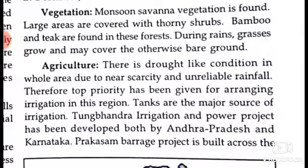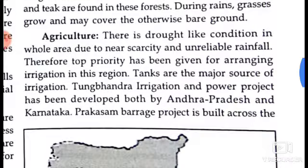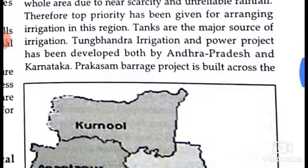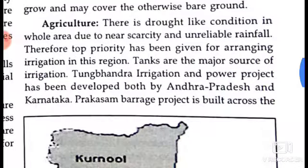There is drought-like condition in the whole area due to near scarcity and unreliable rainfall. Therefore, top priority has been given to arranging irrigation in this region, and tanks are the major source of irrigation. The Tungabhadra Irrigation and Power Project has been developed by Andhra Pradesh and Karnataka.